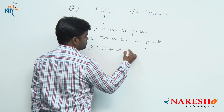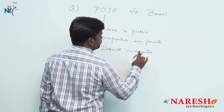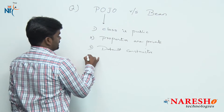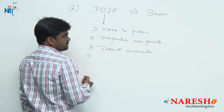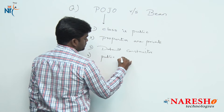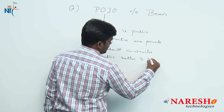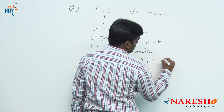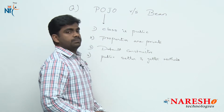Next, the default constructor is mandatory. Default constructor means a no-arguments constructor — it is mandatory to define it. And next, every property must have a public setter method and a public getter method. These getter and setter methods are mandatory. These are the POJO rules.